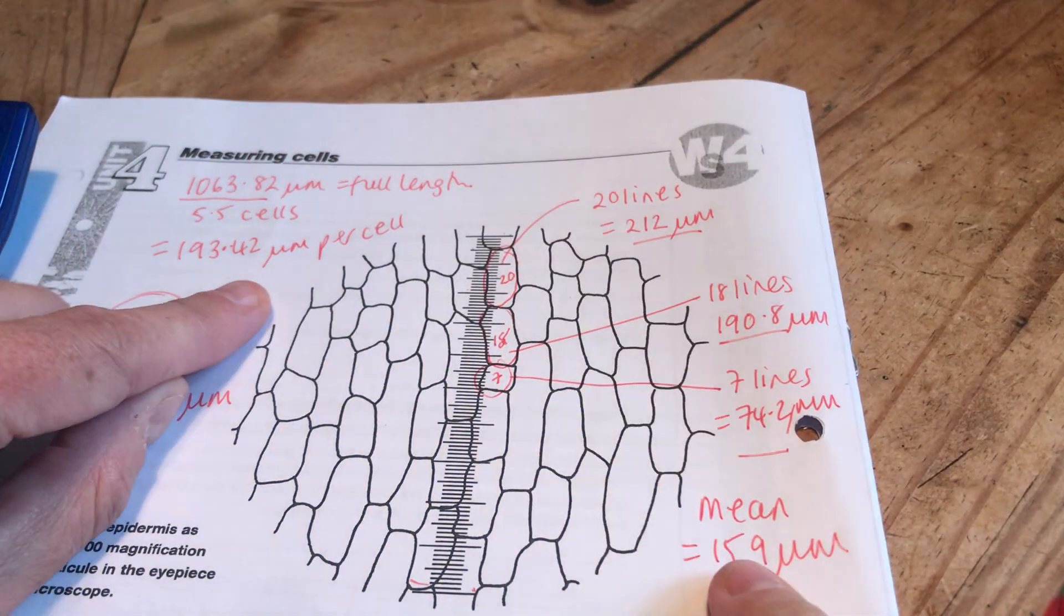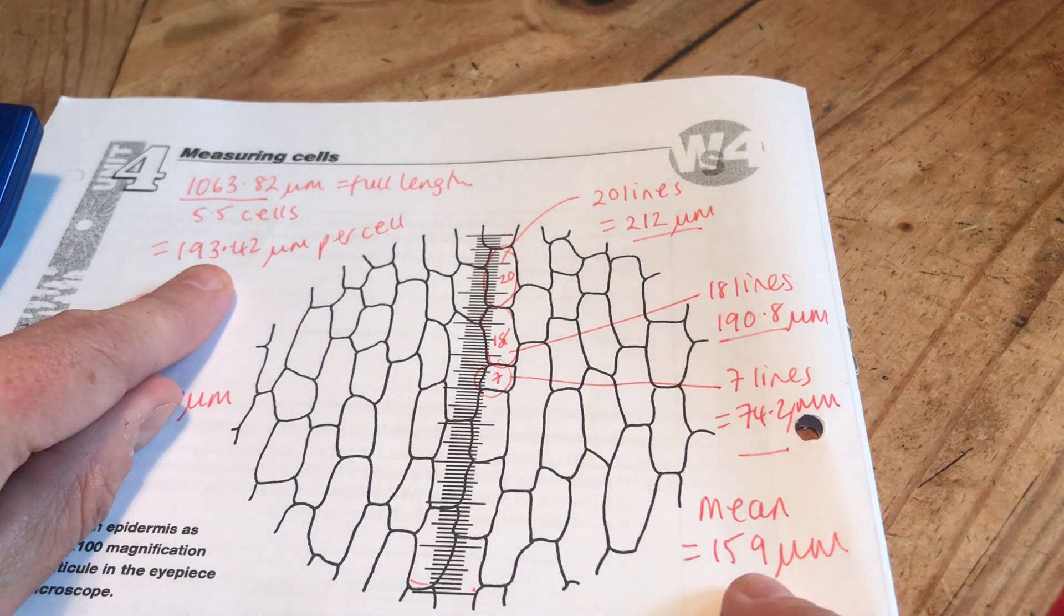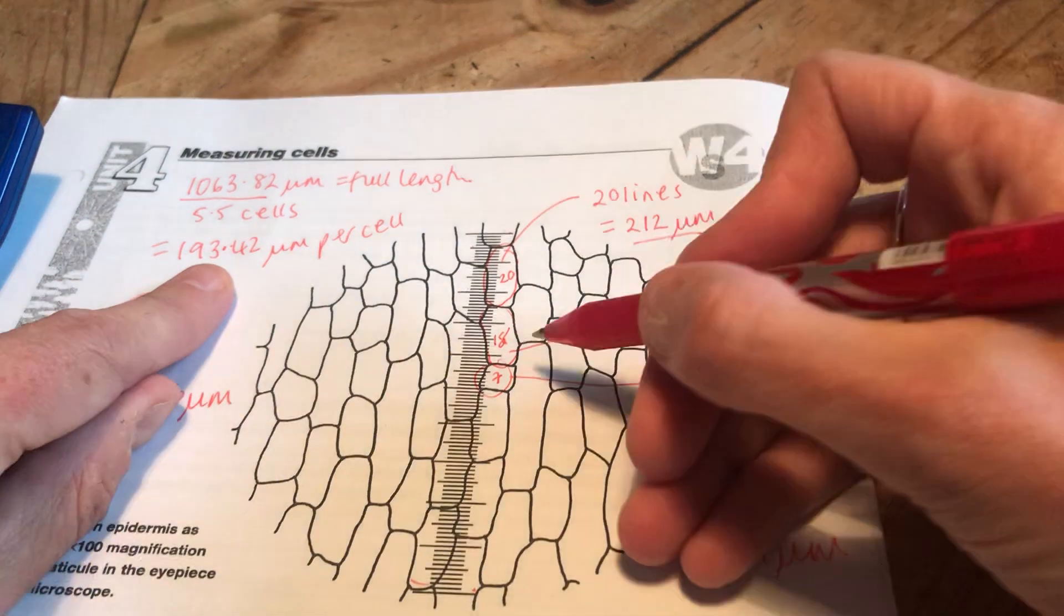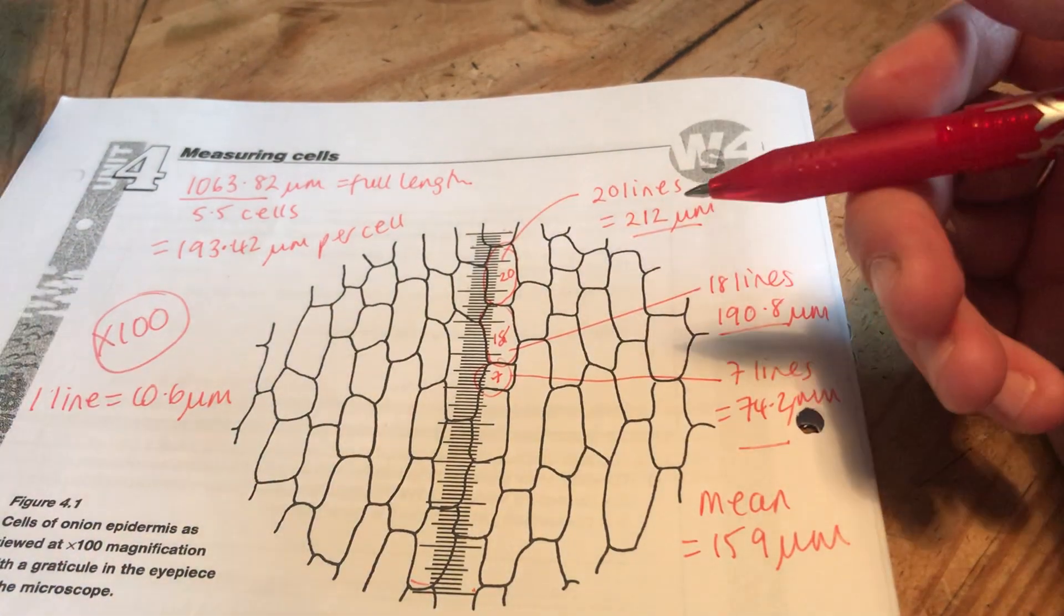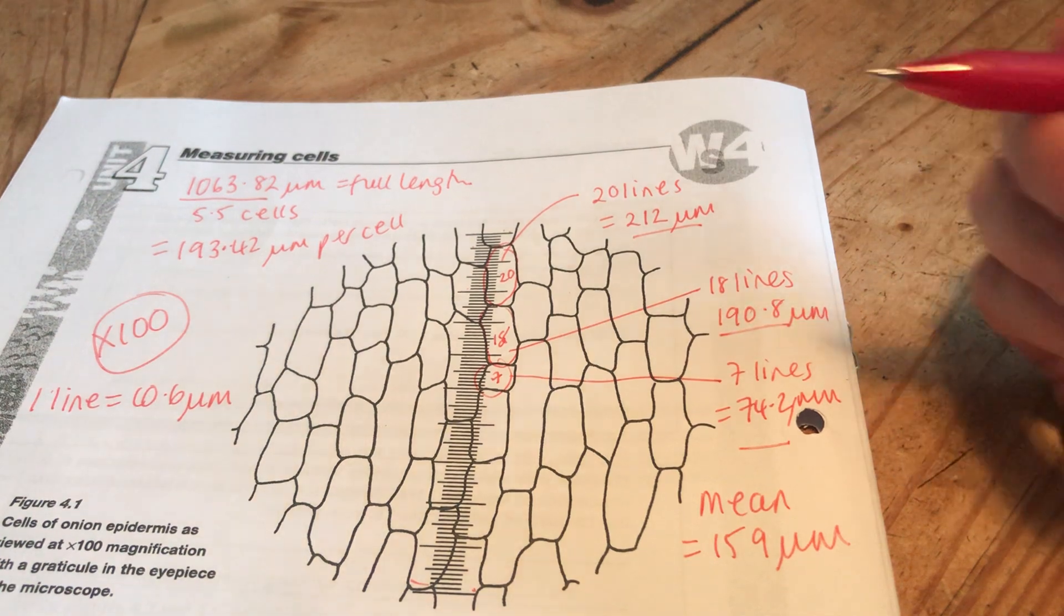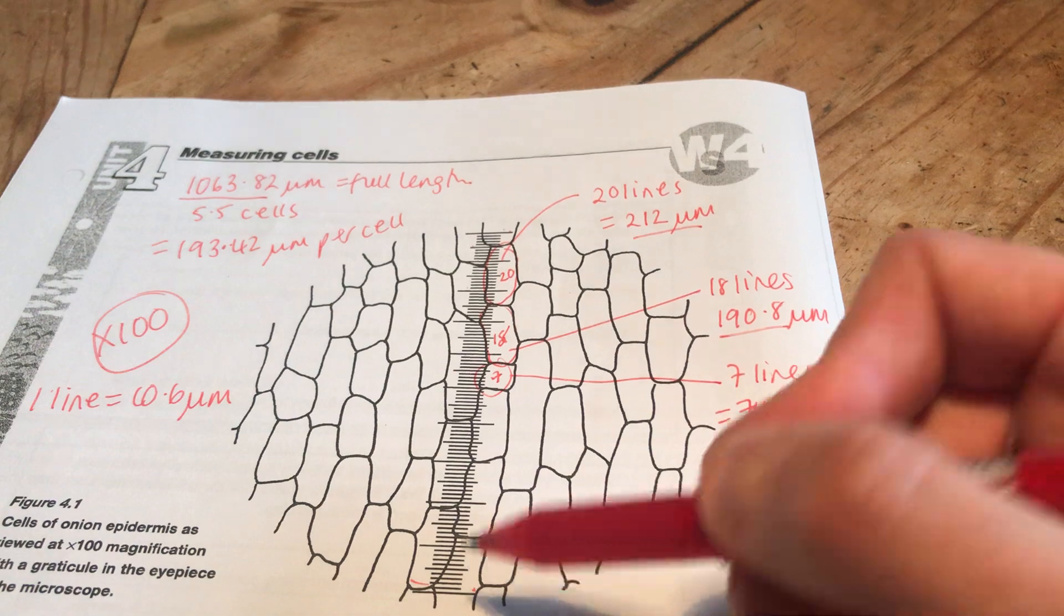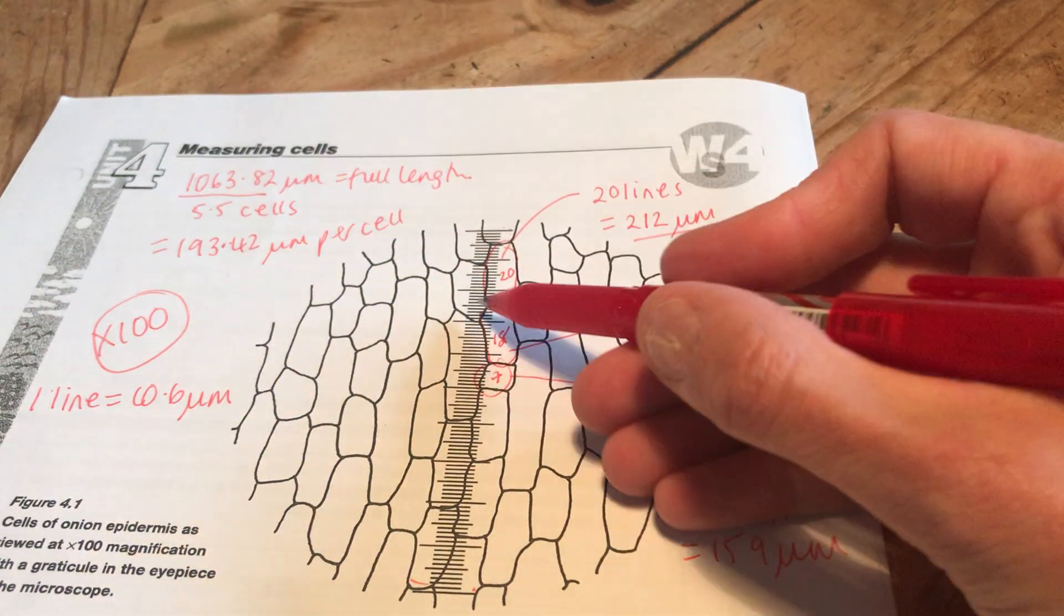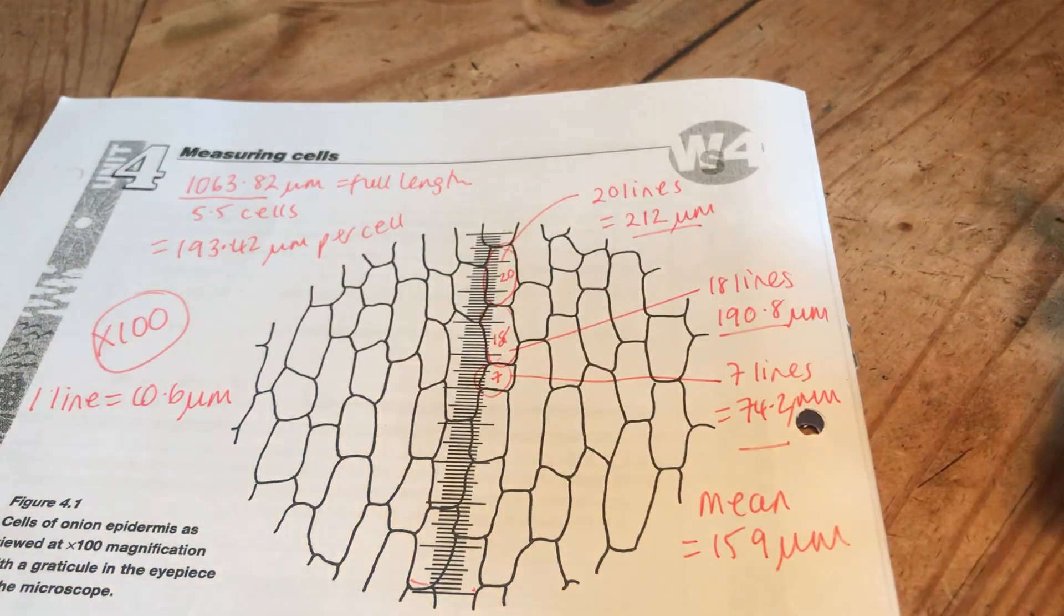So that gives me 193.42 micrometers per cell. How does that compare to the one I've just got? A bit different. Not hugely problematic. I guess this one's going to be skewed downwards by this little piddly cell, isn't it? There's lots of different ways of doing this. There's no right answer. The more cells that you take into account in your mean, the better your mean will be. Here, I've taken five or six cells along that line into account. So I'm more inclined to trust that one there.